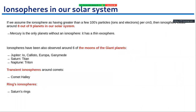Ionospheres exist throughout our solar system. All planets except Mercury have an ionosphere — Mercury has only a very thin exosphere. Moons around planets can also have ionospheres, as can comets. Even the rings of Saturn have their own ionosphere due to photoionization of charged dust particles.